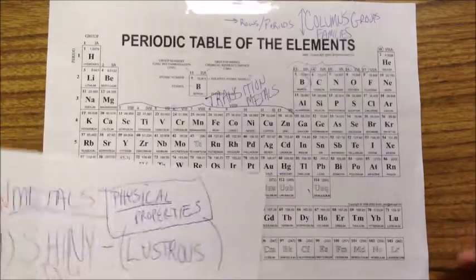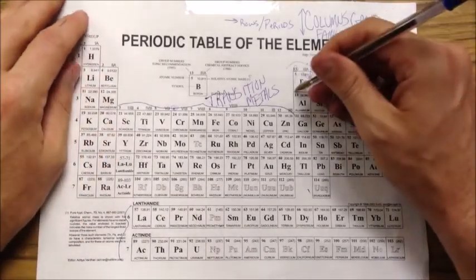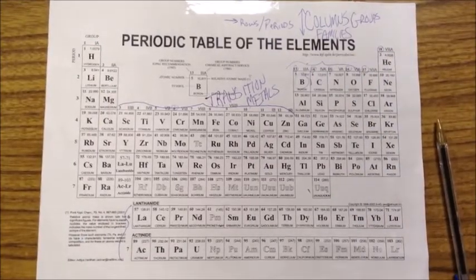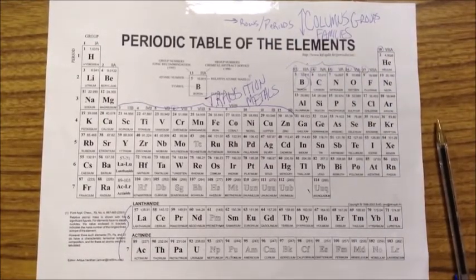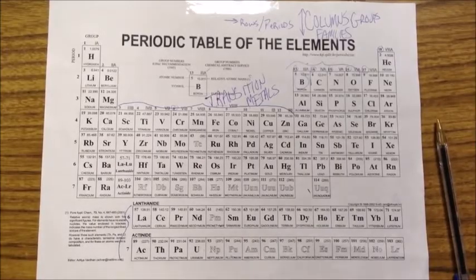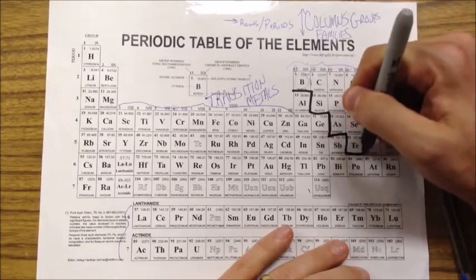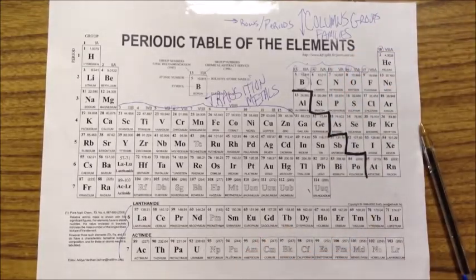And on your periodic table, you should know that there is a dividing line between the metals and non-metals. And we've already put that on yours, that little staircase there, that is the dividing line between metals and non-metals.